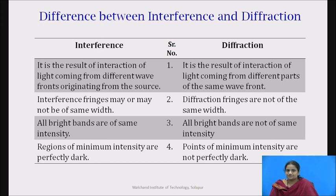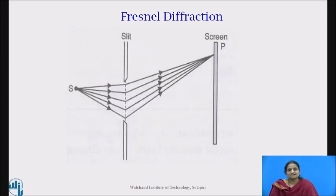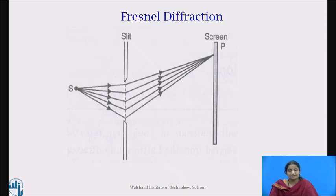These are the main differences between interference and diffraction. The diffraction phenomena are broadly classified into two types: Fresnel diffraction and Fraunhofer diffraction. In Fresnel diffraction, the source and the screen are effectively at finite distances from the obstacle. Lenses are not used to make them parallel. The incident wavefront is either spherical or cylindrical — it is not planar. As a result, the phase of secondary wavelets is not the same at all points in the plane of the obstacle. The resultant amplitude at any point of the screen is obtained by the mutual interference of secondary wavelets from different elements of the unblocked portions of the wavefront. It is experimentally simple but the analysis is complex.